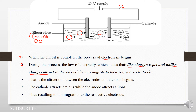So what happens is that our anode is positively charged, meaning it is electron deficient. It has very many positive charges.